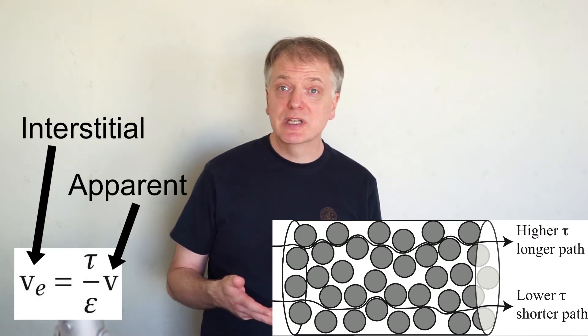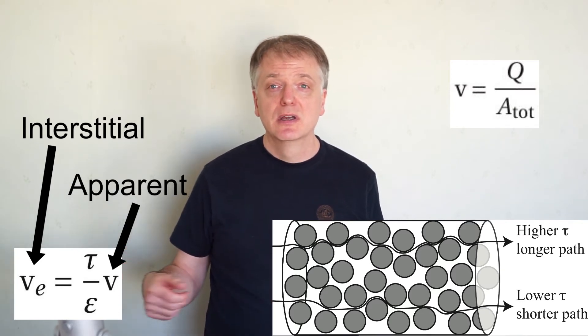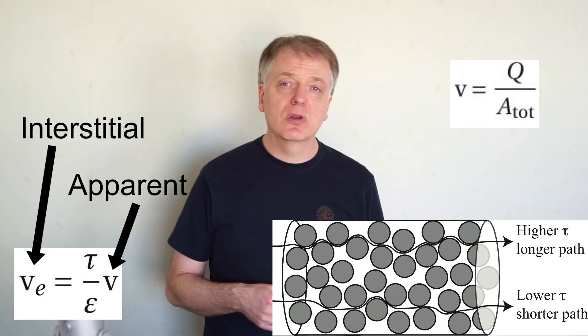The apparent velocity is the velocity you get if you divide the volumetric flow by the cross-section area. Thus calculating the apparent velocity is a bit like pretending that the column was empty.